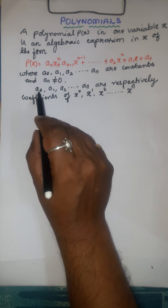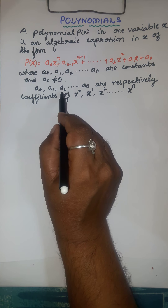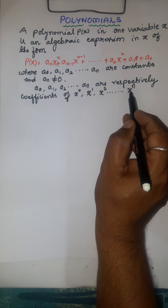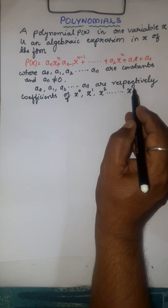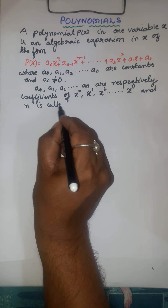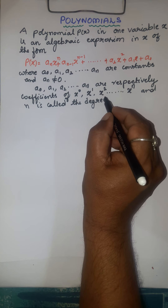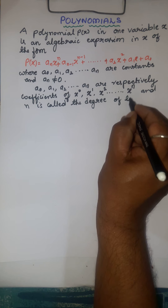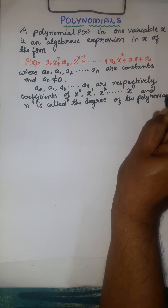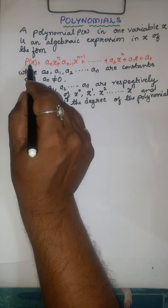So a_0 is the coefficient of x to the power of 0, a_1 is the coefficient of x to the power of 1, a_2 is the coefficient of x squared, and a_n is the coefficient of x to the power of n. And n is called the degree of the polynomial. Degree means the highest power of a variable.